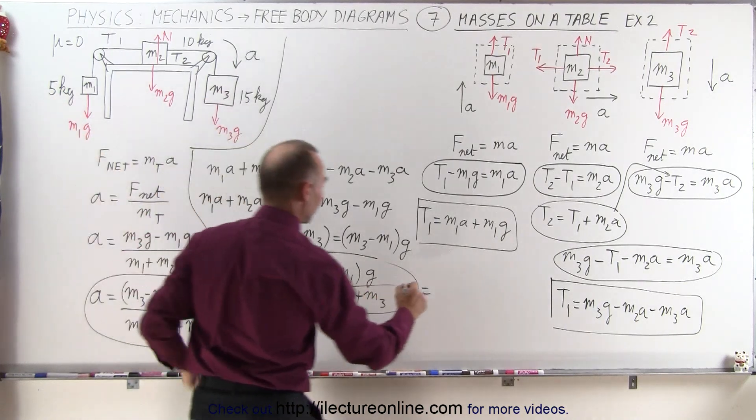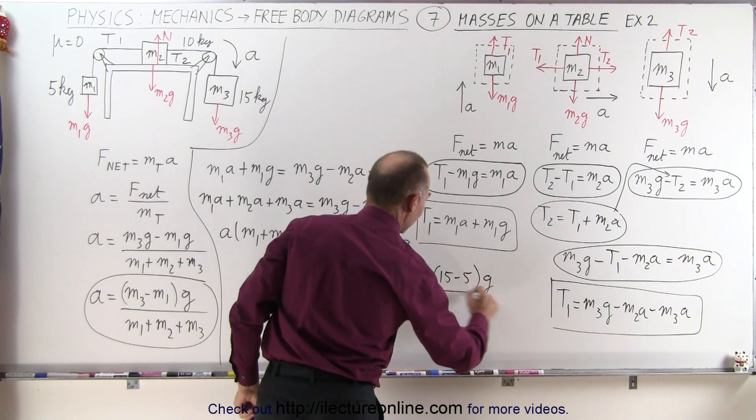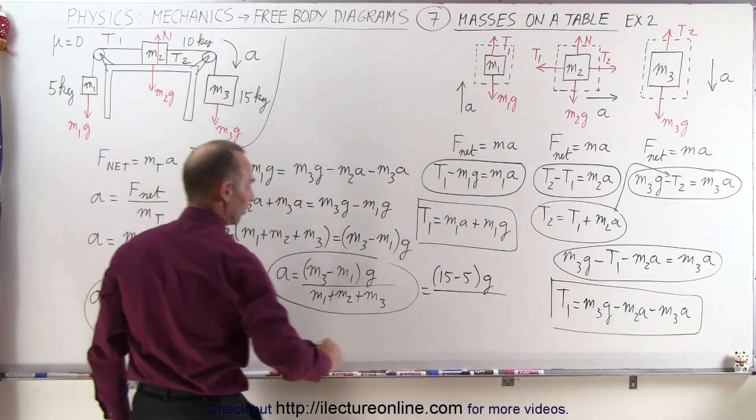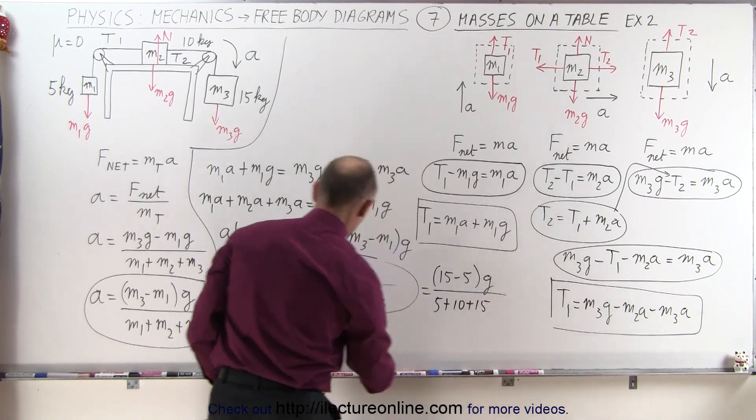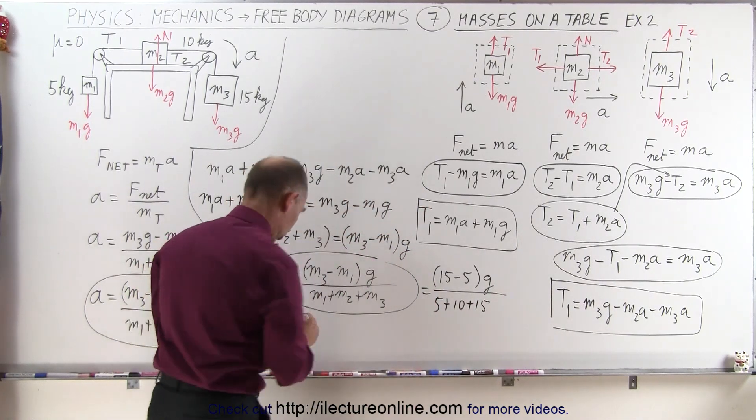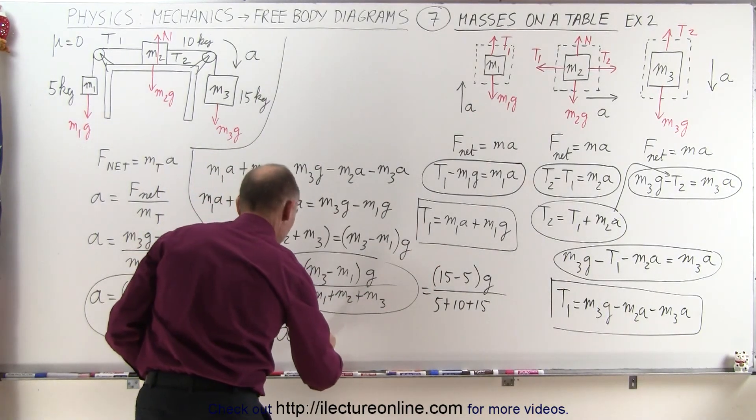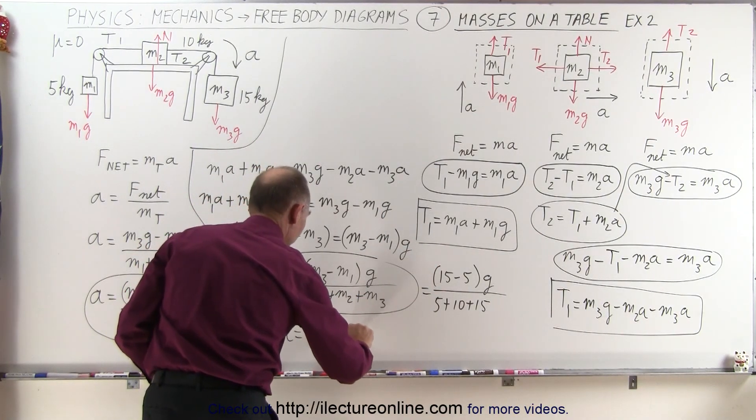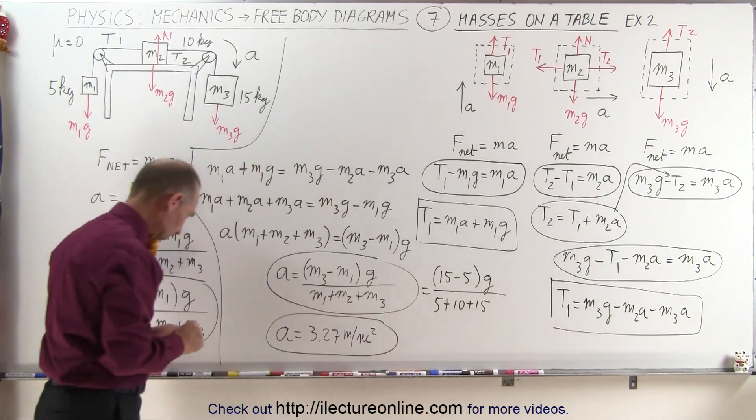If we now want to plug in all the known quantities, so this becomes equal to m3 minus m1, m3 is 15 minus 5, so we have 15 minus 5 times g, divided by the sum of all three masses, which is 5 plus 10 plus 15, and so we have a is equal to 3.27 meters per second squared for the acceleration in this particular case.